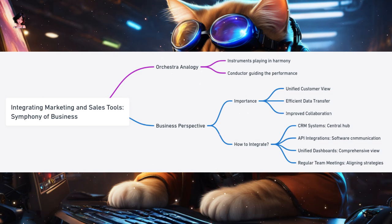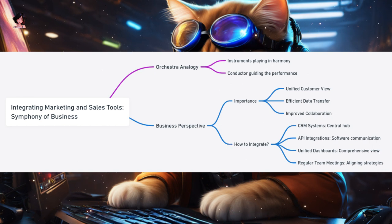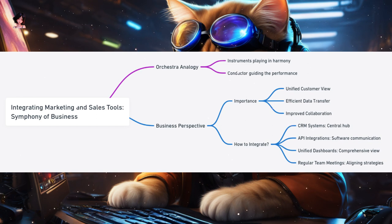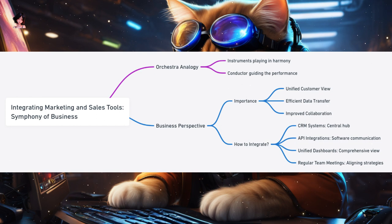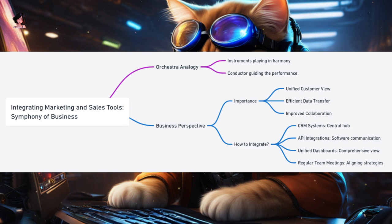How to integrate marketing and sales tools: CRM systems can serve as the central hub, storing data from both marketing and sales activities. API integrations connect different software tools so they can share data seamlessly. Unified dashboards show data from both marketing and sales, giving a comprehensive view of performance. Regular team meetings ensure both teams discuss strategies, share insights, and align goals.